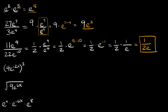Next we have four times e raised to the negative 2x, and then all that is raised to the third power. This exponent out here we have to apply to everything inside the parentheses. Inside the parentheses we have two different terms — this four and this e raised to the negative 2x — so we have to apply the exponent to both. This is going to be equal to 4 raised to the third power times e raised to the negative 2x, and then we raise that whole thing to the third power.